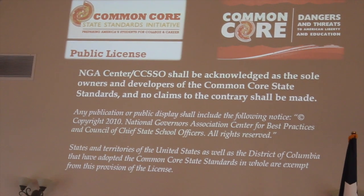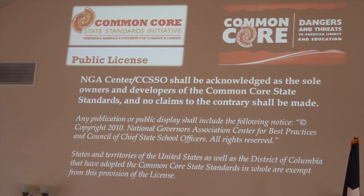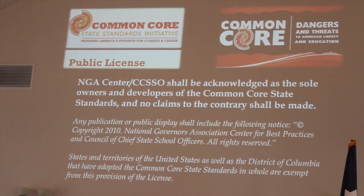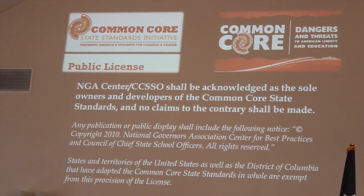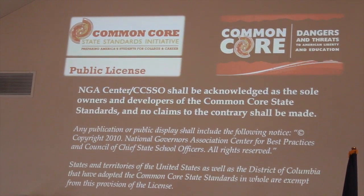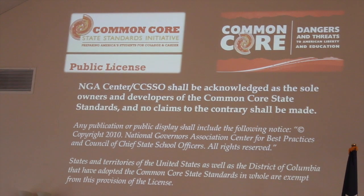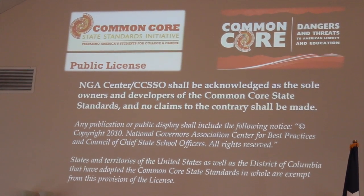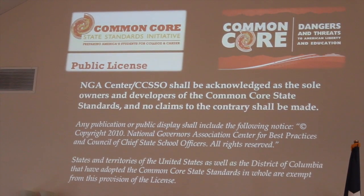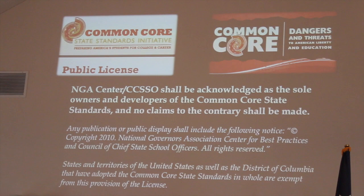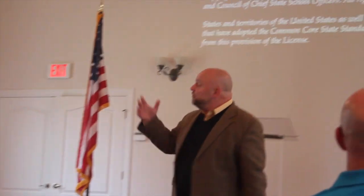It's owned by these two small Washington lobbyist groups. The NGA Center and the CCSSO shall be acknowledged as the sole owners and developers of the Common Core State Standards, and no claims to the contrary shall be made. So if we as a nation don't like the Common Core Standards, how do you reach them? No one in these two organizations has ever been elected to public office. They can't be traced. There's no way you can get them. Legislatively, this is transforming your schools, but you can't reach these people.